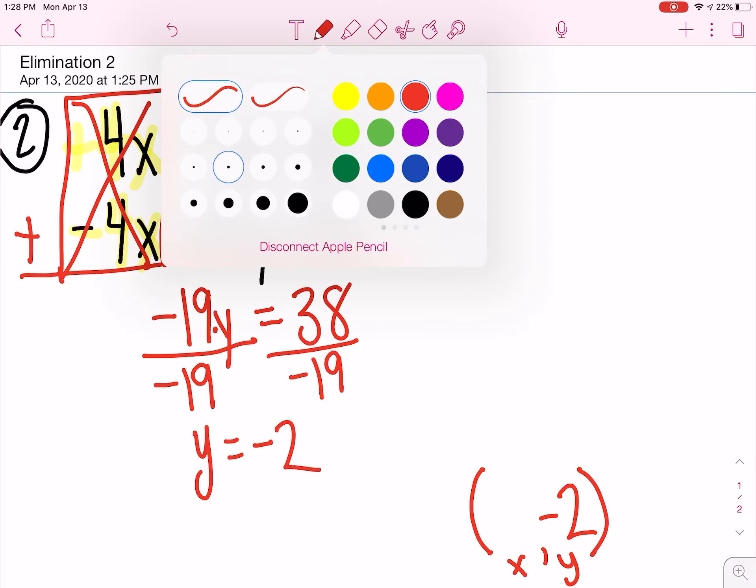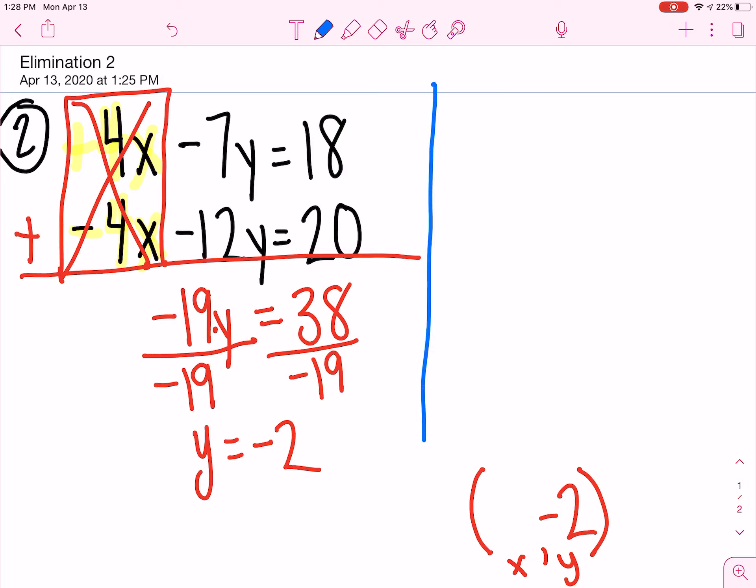Now, using blue, I need to go and find my X value. Now, I think I'm going to use the top one again because I feel like the numbers are smaller, but it doesn't really matter. You can use either, and you should get the same answer. So it looks like I have 4X, because I don't know what X is, minus 7, but times, because they're sitting right next to each other, Y is negative 2.